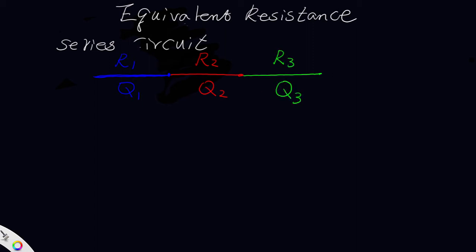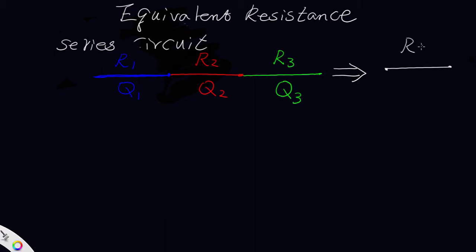So this set of airways can be reduced to one equivalent airway. It has a resistance of R-equivalent and the quantity flowing in this equivalent airway is Q.